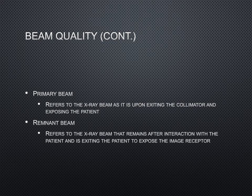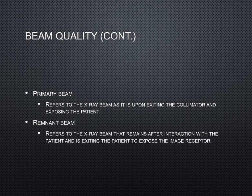Related to the discussion of quantity and quality are the terms primary beam and remnant beam. Primary beam refers to the x-ray beam as it exits the collimator and exposes the patient. Remnant beam refers to the x-ray beam that remains after interaction with the patient and exits the patient to expose the IR. The remnant beam is composed of transmitted photons — those exiting the patient without having interacted with anatomic structures — and scattered photons, which have lost energy and been redirected after interacting with anatomic structures.